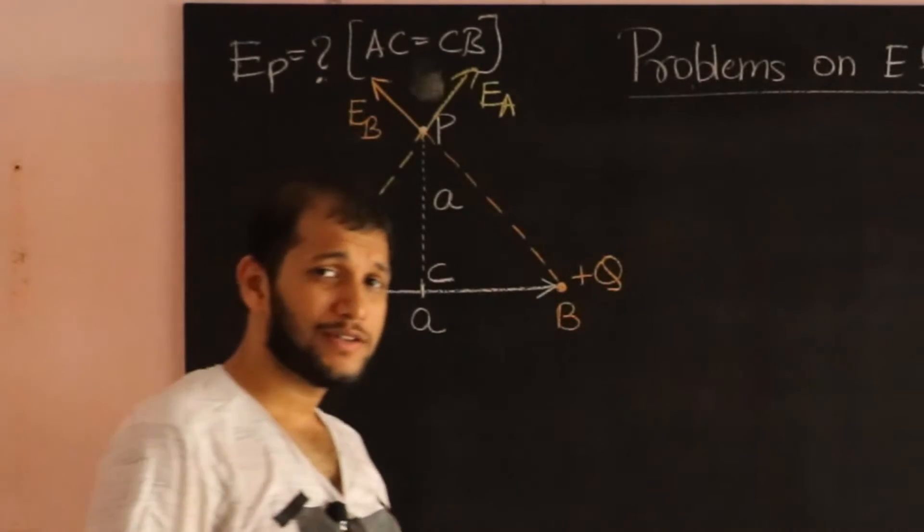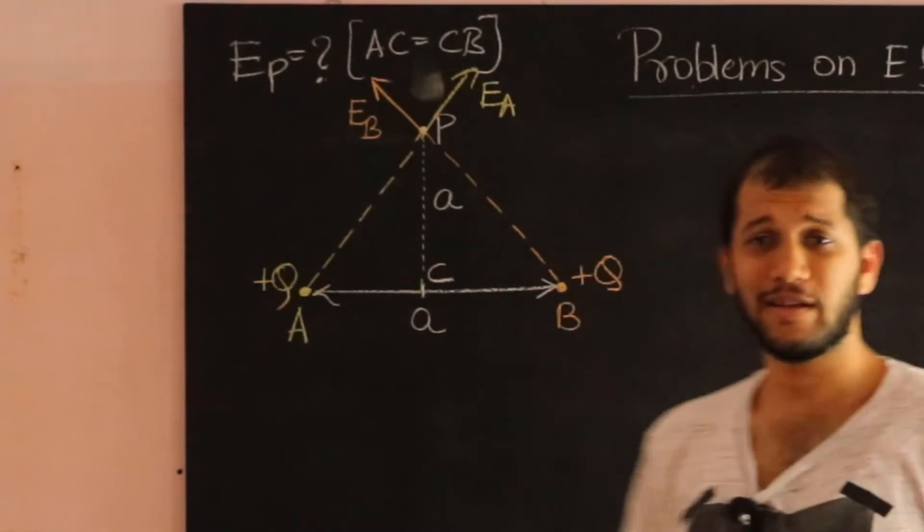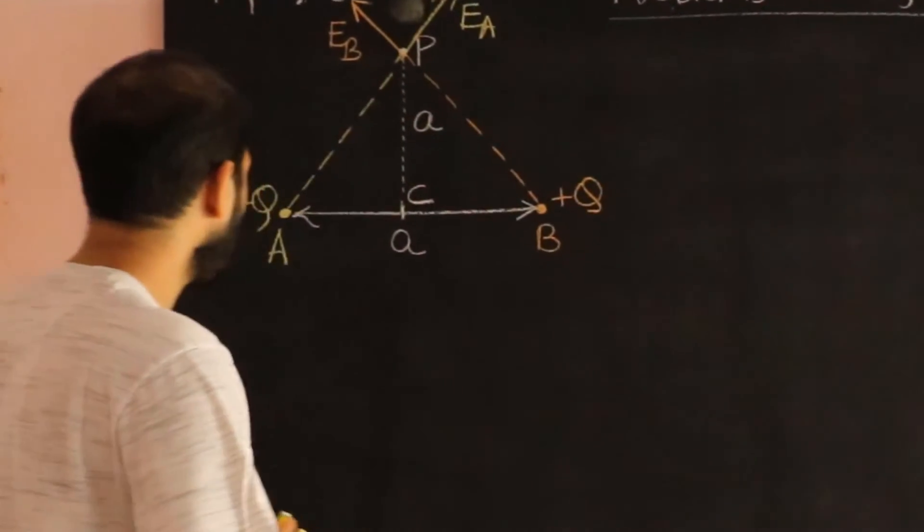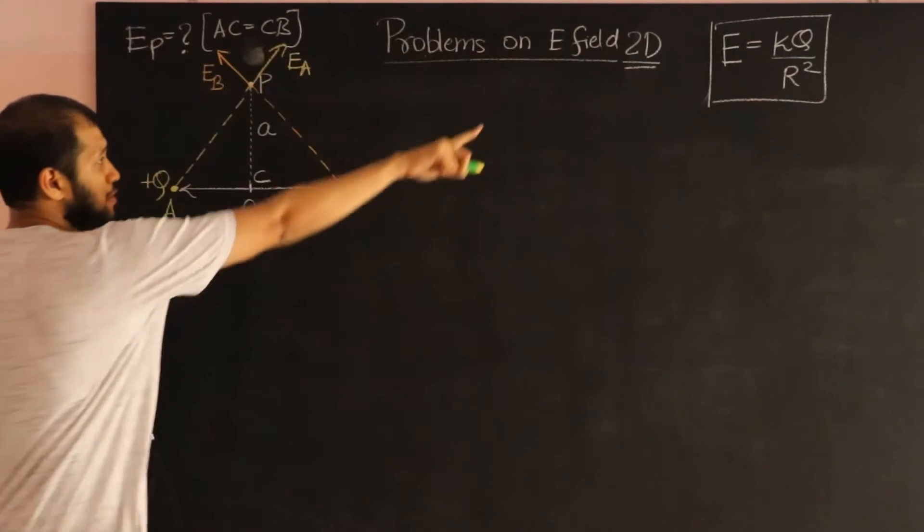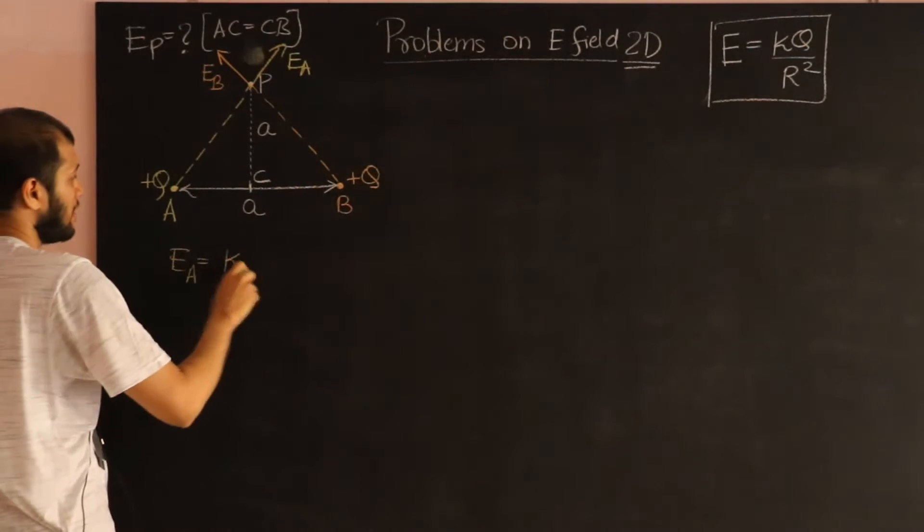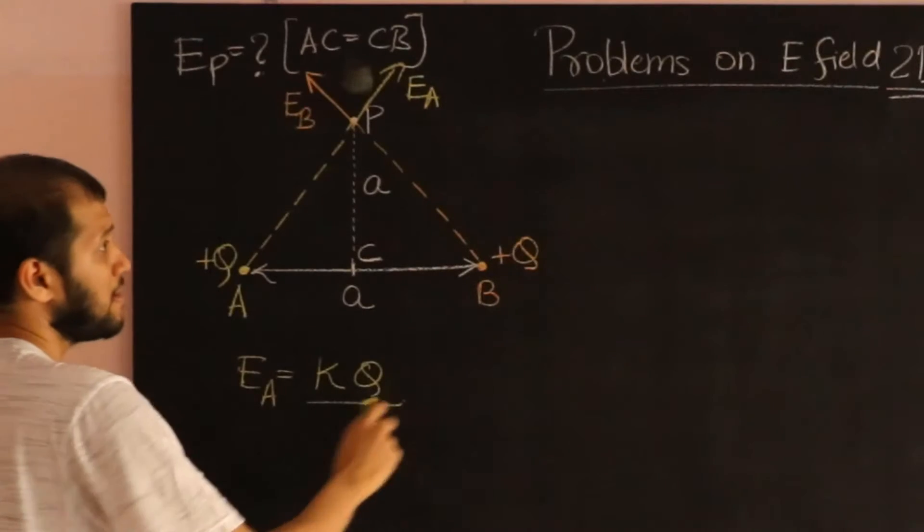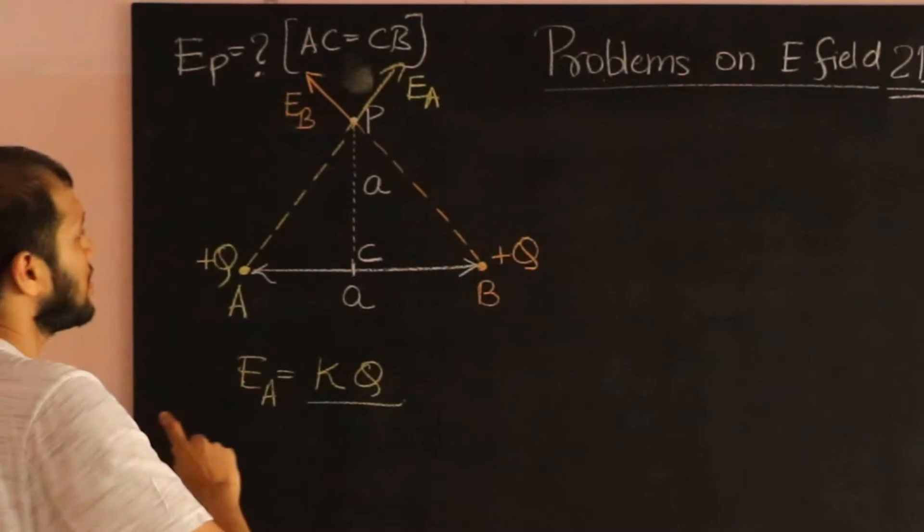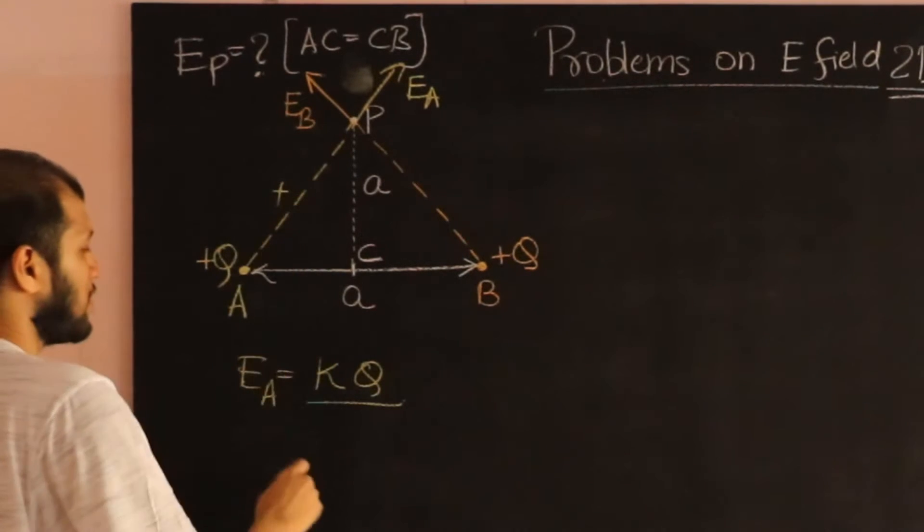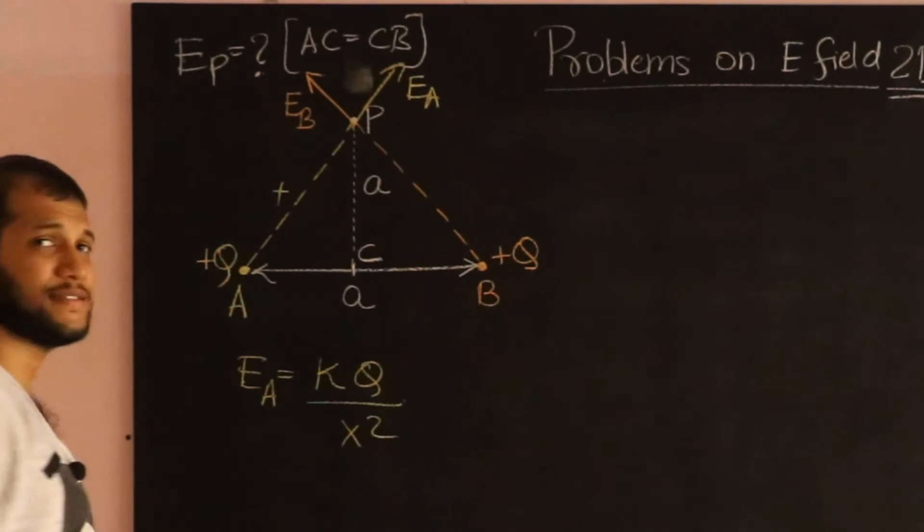Let's figure out the magnitude first and then we'll worry about calculating the vector sum. So, EA is going to be, I'm going to use the same formula, K into Q, divided by R square. R is the distance from A to P.